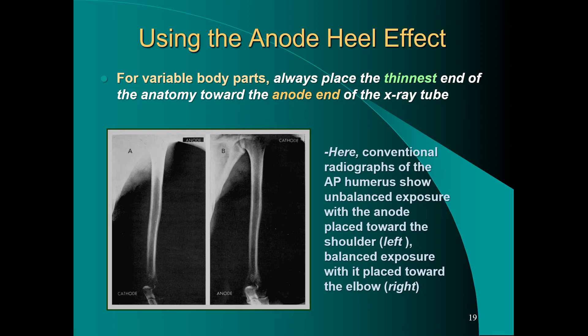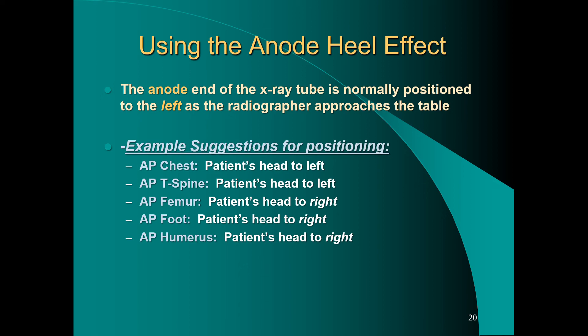A more balanced exposure is achieved with the anode placed toward the elbow. In image A, the elbow is much darker with more radiographic density and the shoulder is much brighter. By flipping those orientations, you orient the anode toward the elbow — which needs less exposure — and the cathode toward the thicker shoulder end where the rays are strongest. This works great for thoracic spines, lumbar spines, femurs, humeri — any wedge-shaped body part.